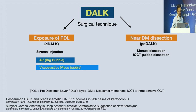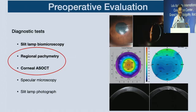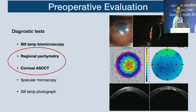Within a hundred microns you can inject air or viscoelastic into the stroma to create the plane of separation. Preoperatively, the two most important investigations are: one, the regional pachymetry — the thickness across the cornea so you can decide what size of trephine to use, especially in ectatic disorders; and two, a corneal anterior segment OCT to see whether the pathology is involving the Descemet's layer or located in the anterior 80 to 90 percent.